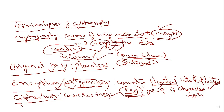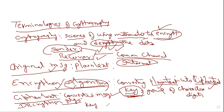At the receiver end, the receiver must read the information, so the receiver conducts decryption — the opposite operation. The receiver uses a decryption algorithm. By using the decryption algorithm and with the help of a key, the receiver can restore the information. There are two types of cryptographic algorithms: symmetric and asymmetric key cryptography, which I will explain in the next video.